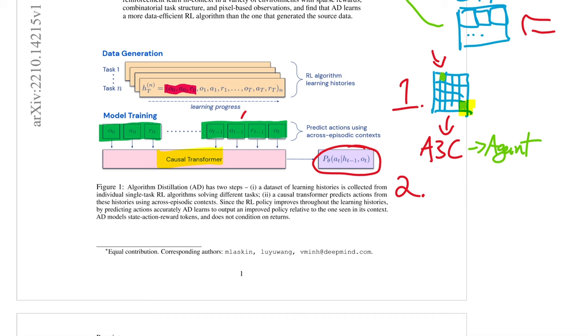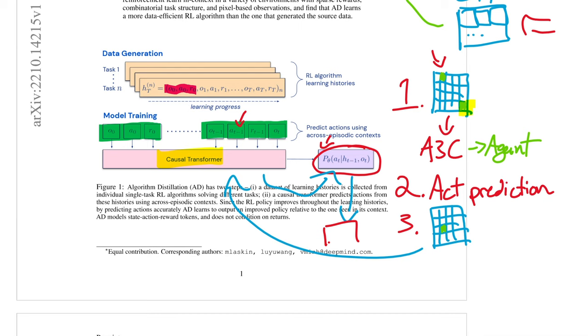Finally, in step three, you can grab a new unseen task, start feeding the observations into your transformer, predict the next action, take that action in the environment, and watch as your agent learns how to maximize the reward just like a reinforcement learning agent would. Wait, is that all? Why would that work? Am I missing something? Maybe you're thinking that. Well yeah, that's pretty much the whole algorithm, though I admit I did leave out one very crucial detail here.